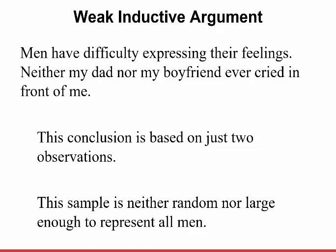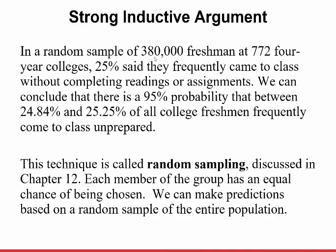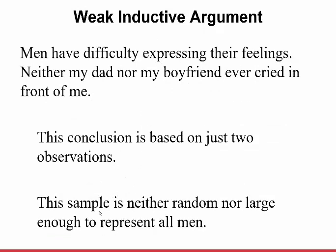For a weak inductive argument — your conjecture hypothesis might be that men have difficulty expressing their feelings, reasoning that neither your dad nor your boyfriend ever cried in front of you, therefore men must have difficulty expressing feelings. This conclusion is based on just two observations, and the sample is neither random nor large enough to represent all men. For example, when I got married a few years ago, I cried the entire day — because I was so happy. That's a counterargument that disproves this conjecture. Strong arguments are randomly done with a large sample; weak ones have a small, non-random convenience sample.